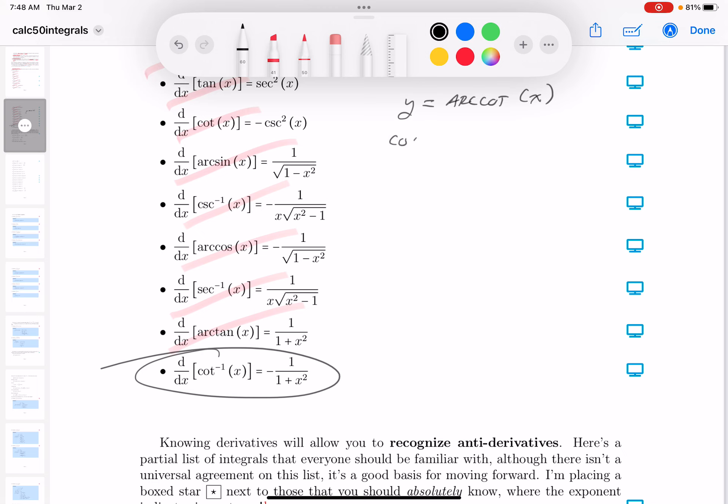I'm going to write this as the cotangent of y is equal to x. I don't like cotangent. I'll write it down as tangent. Tangent of y is going to be 1 over x. I'm going to differentiate. What do you get? Secant squared y dy dx equals minus 1 over x squared.